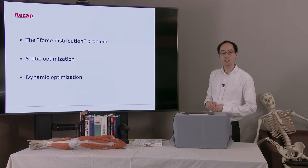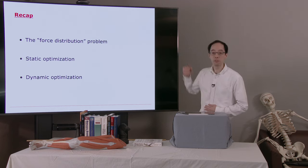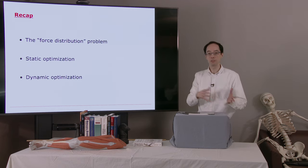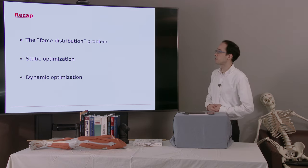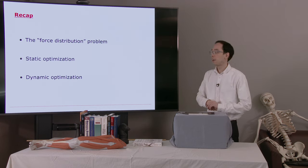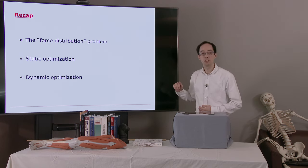So just to recap, what did we see in chapter 9? Well, we saw the muscle force distribution problem. We have more muscles than degrees of freedom in the body, and so somehow we need to figure out how these muscles are coordinated. We can use static optimization to do that, looking at just one instant of time.